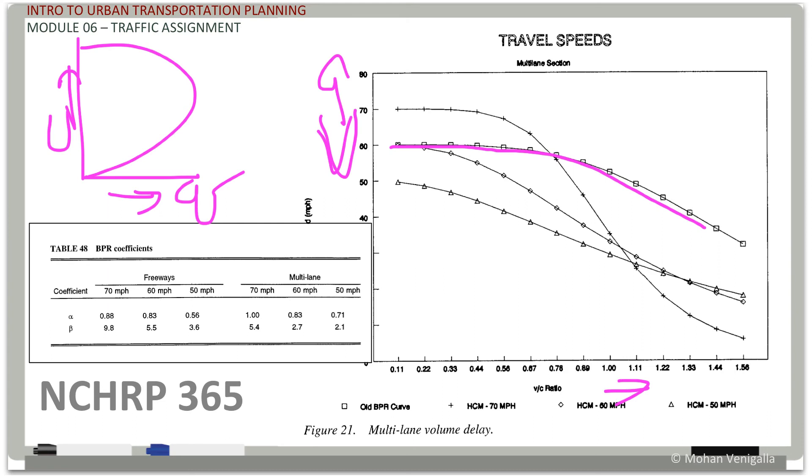So this is the BPR curve. What I just circled there, you have Highway Capacity Manual for 70 miles per hour, Highway Capacity Manual for 60 miles per hour, Highway Capacity Manual 50 miles per hour. There are different functions. And again, BPR coefficients, recommended coefficients for multi-lane highways and freeways, they are like that. NCHRP 365, that's your textbook.